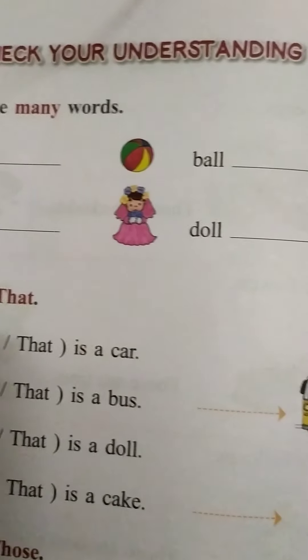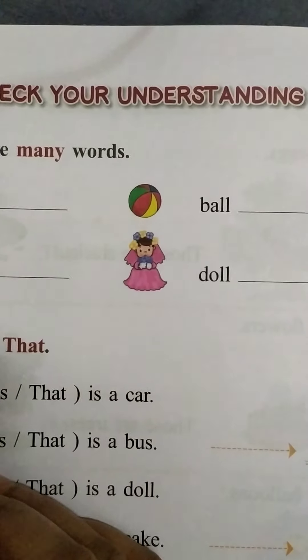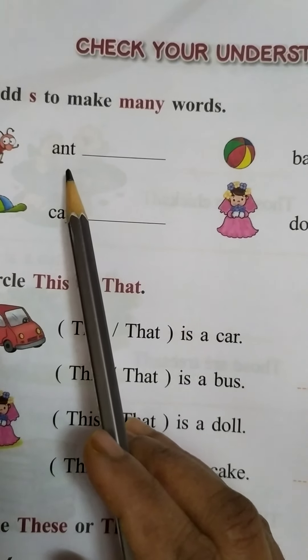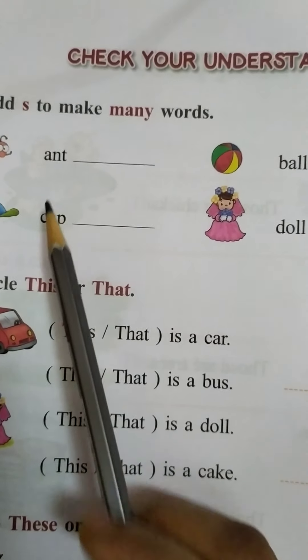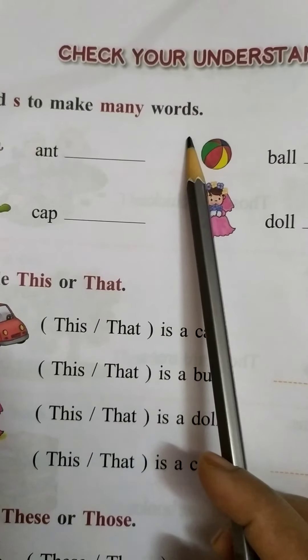Check your understanding. This page you will be completing children. The things which are more than one, we are using S. We are adding S to the word. Add S to make many words.